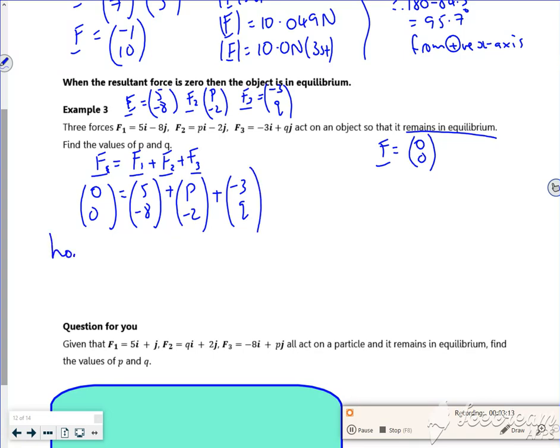So if I look horizontally, I can create an equation going horizontally. So 0 = 5 + P - 3, so P is -2. And I can also do it vertically. So 0 = -8 - 2 + Q, so Q is 10.